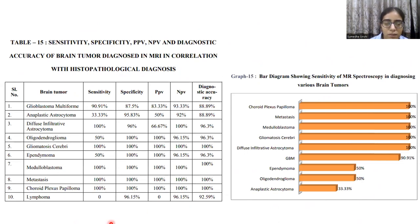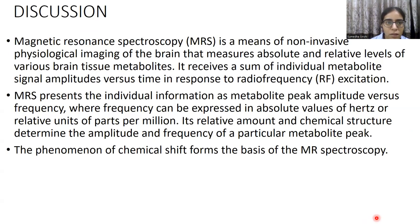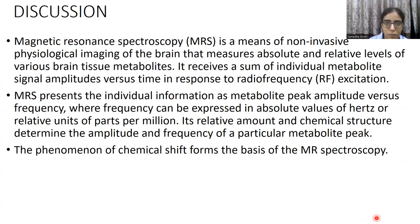A table showing sensitivity, specificity, and various predictive values with respect to histopathological diagnosis was also presented. For the discussion: MRS is a non-invasive physiological imaging technique of the brain which measures absolute and relative levels of various brain tissue metabolites. MRS presents individual information as metabolite peak amplitude versus frequency, where frequency can be expressed as absolute values in hertz, or better, as relative units of parts per million (ppm).